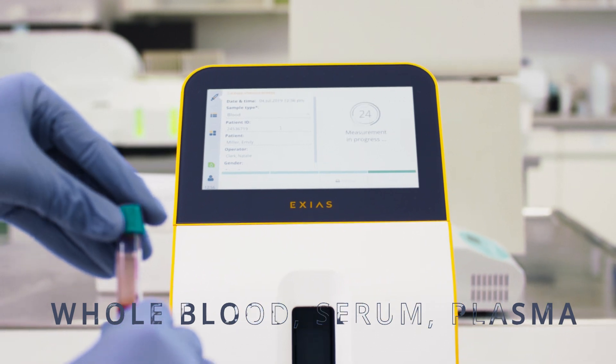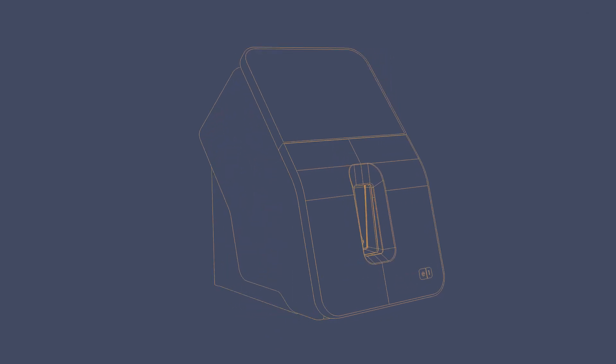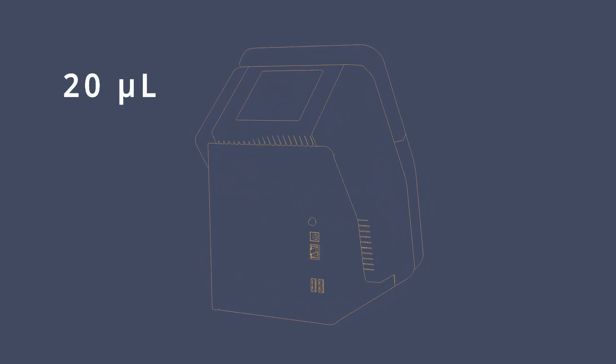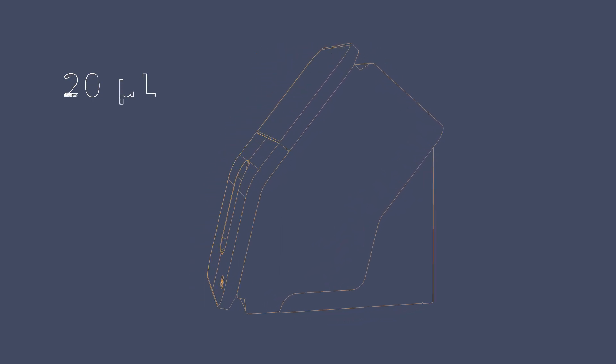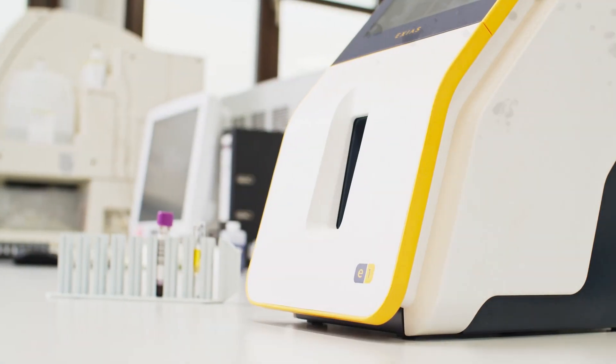The E1 provides reliable and full-panel results within 25 seconds. The fastest system on the market only uses 20 microliters of sample, and with its smartphone-like interface, it is as easy to use as your everyday mobile device.